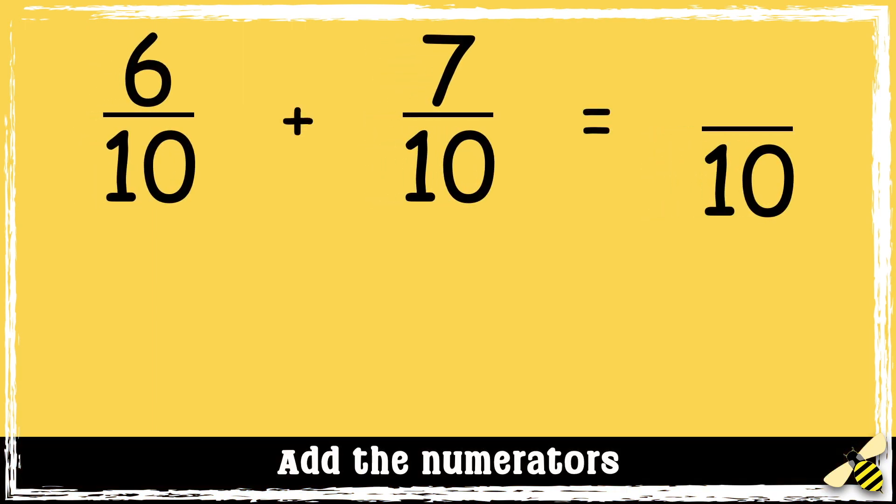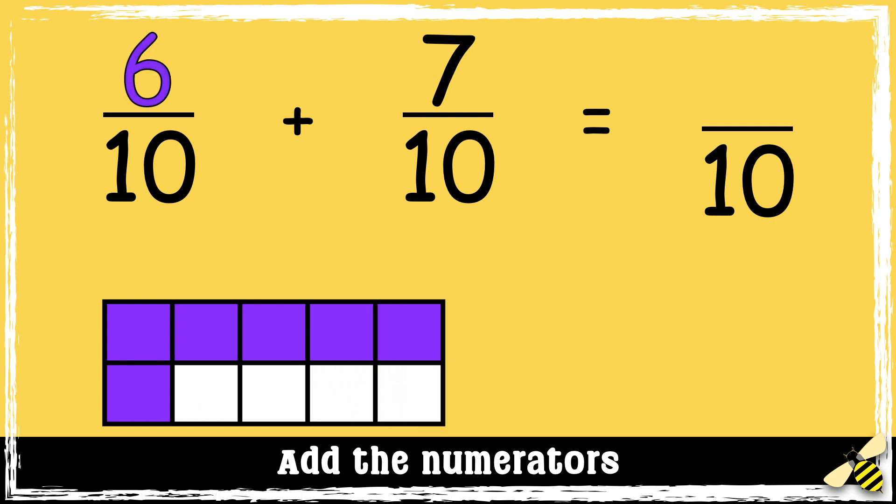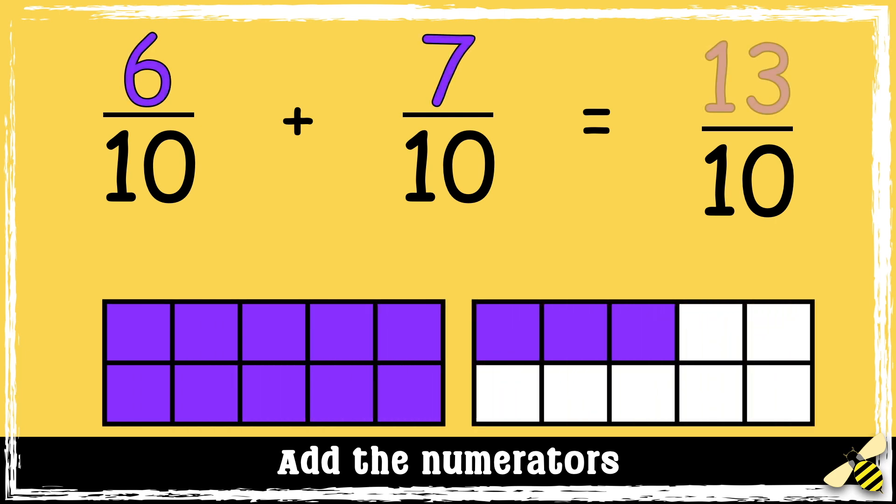Remember, when we add fractions, as long as the denominators are the same, we only add the numerators. So 6 add 7 equals 13.